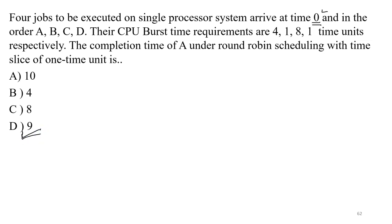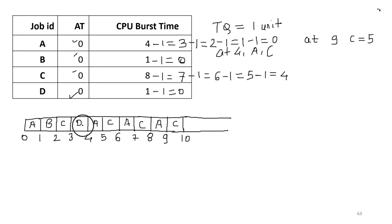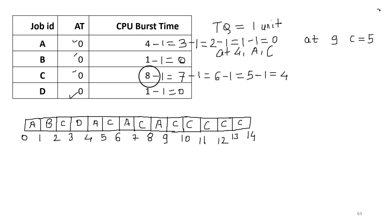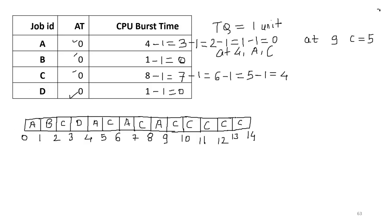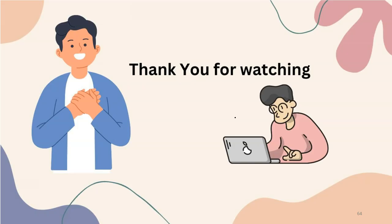We can say the completion time of A is nine. We can also complete the chart: C completes at fourteen. The total burst time is four plus one plus eight plus one, that is fourteen — so our Gantt chart is also verified as correct. The completion time of C is not part of the question. Our answer is: the completion time of A under round-robin scheduling with a time slice of one time unit is nine. For more such videos, stay connected with this channel. Thank you.